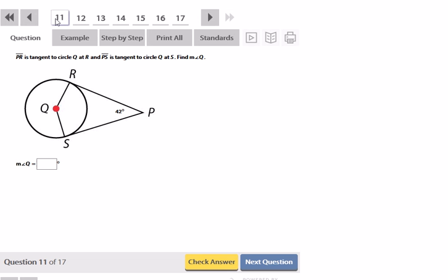PR is tangent to a circle. Find the measure of angle Q. In this case, because both of these are 90 degrees, that means that these two angles are supplementary. So the measure of angle Q would be equal to 180 minus 42, which gives me 138 degrees.